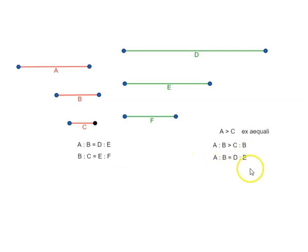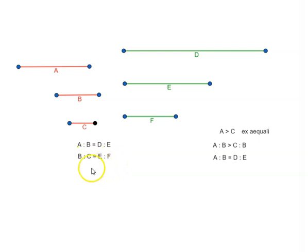We are given that A is to B equals D is to E, and B is to C equals E is to F. That means the inverse ratios are also equal — so C is to B equals F is to E. This is based on proposition 5.7.